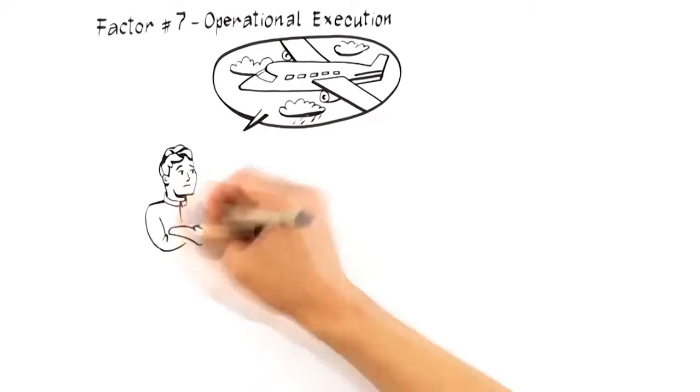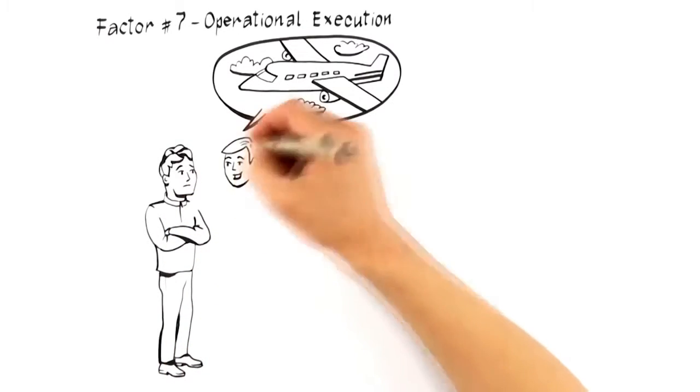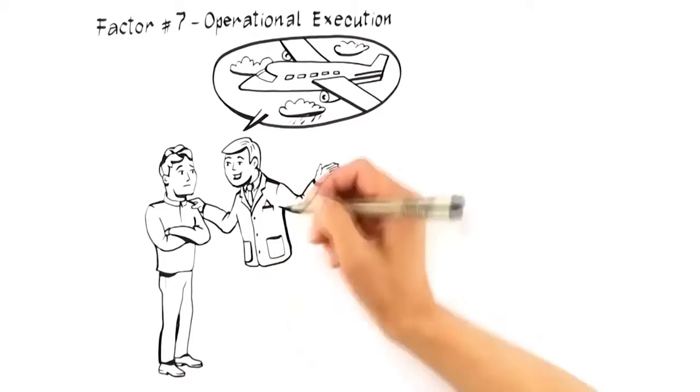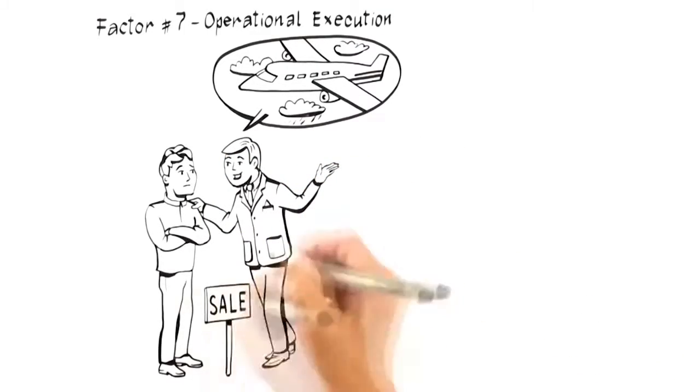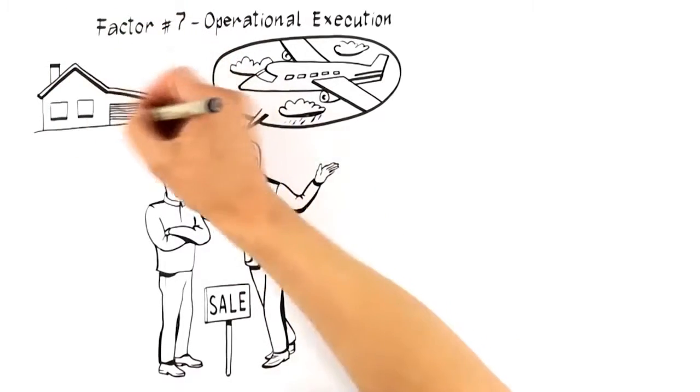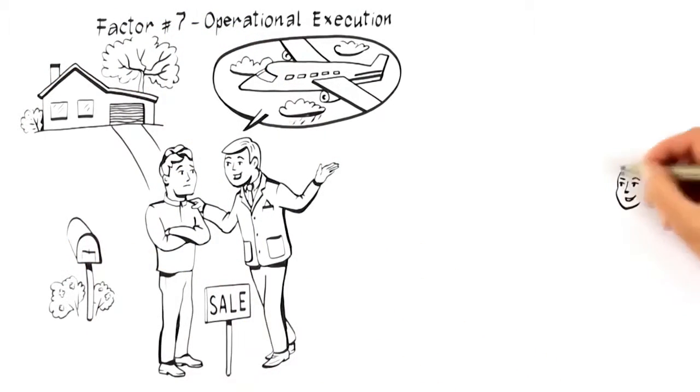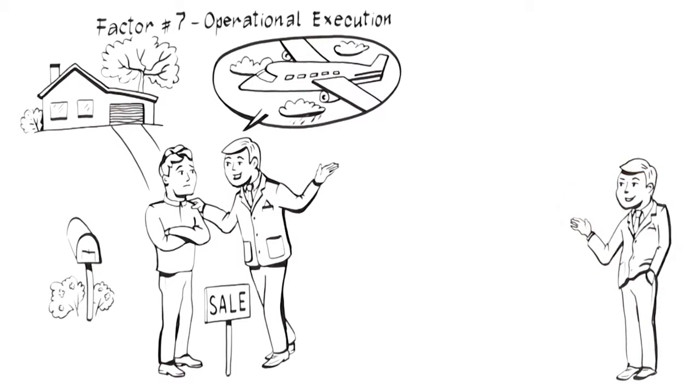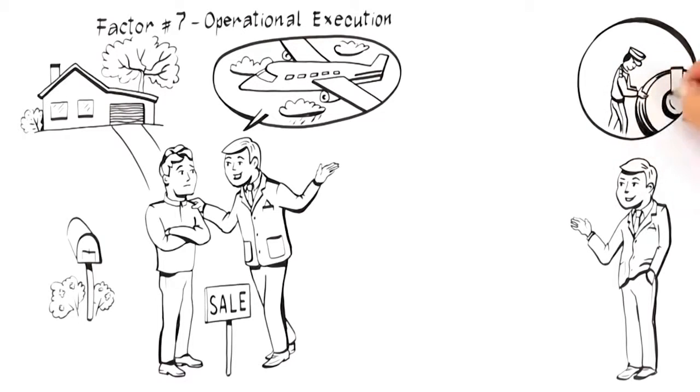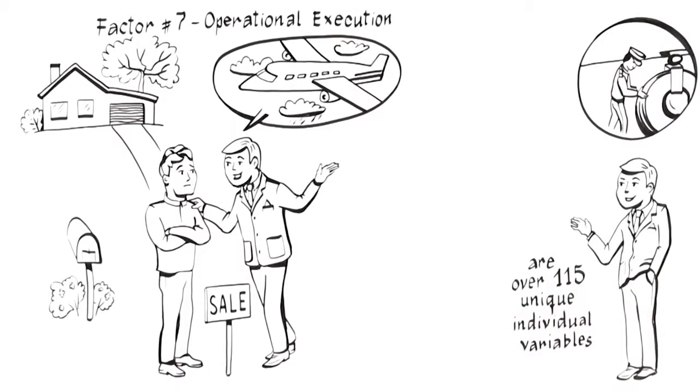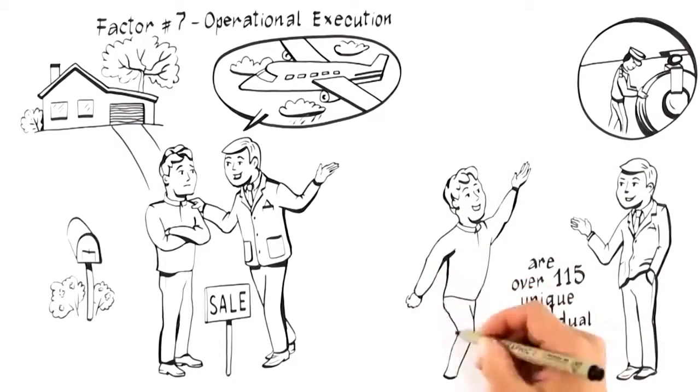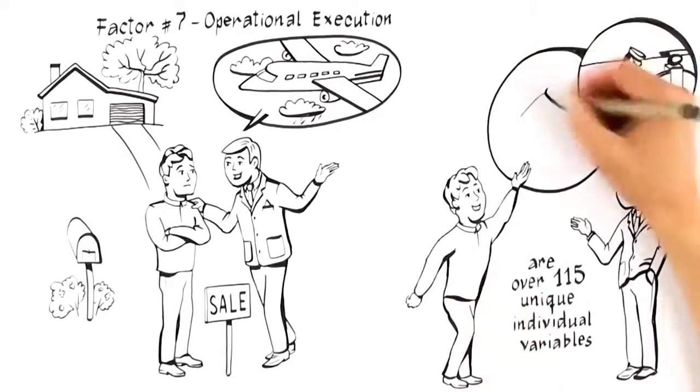The sale of your home is much like flying in an airplane. You want an expert in the cockpit who's flown hundreds of times and follows a set of documented processes to get your plane safely into the air and back on the ground again. You would never want your pilot to be the person who is checking the air in the tires, fueling the plane, washing the windows, or serving drinks up and down the aisle. And because there are over 115 unique individual variables that go into the successful sale of every home, you don't want an agent who doesn't have systems and relationships in place to manage the process.